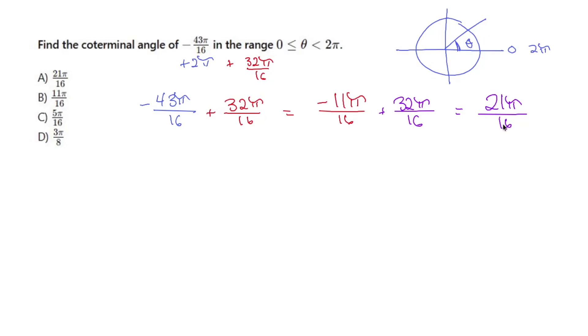21 pi over 16 is in between 0 and 2 pi because 32 pi over 16 is 2 pi. So you would be my answer, which means you would also be my answer. The answer is A, baby.